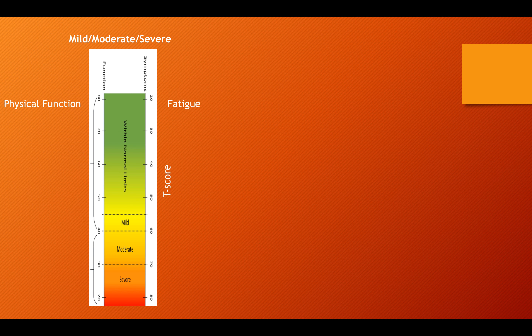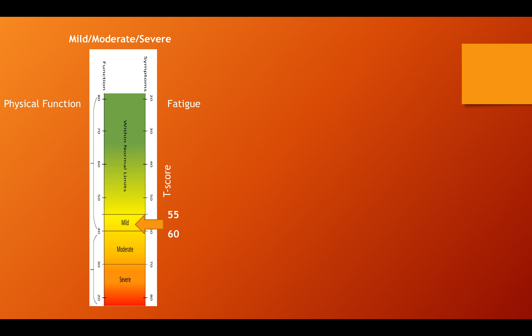Shifting to fatigue on the right-hand side of the chart, more severity corresponds to a higher score, and lower fatigue corresponds to a lower score. Green is lower and orange is higher. Within normal limits would be a low score up to around 55 — within a half standard deviation of normal. From 55 to 60 would be mild symptoms of fatigue, and 60 to 70 would be moderate symptoms of fatigue.